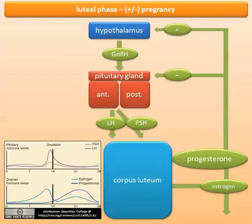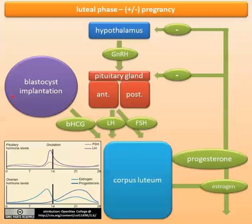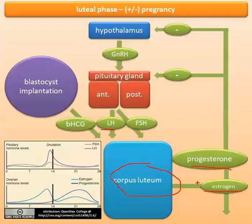If there is a pregnancy, the main difference is that the blastocyst implants and there is beta-HCG production. Beta-HCG production actually starts a little bit before implantation, and it is structurally very similar to LH. So instead of the corpus luteum atrophying and progesterone and estrogen production going down, the beta-HCG maintains the corpus luteum and maintains production of progesterone and estrogen — especially progesterone — which is very important because it allows the pregnancy to continue.